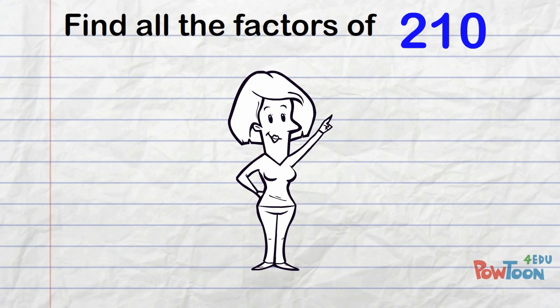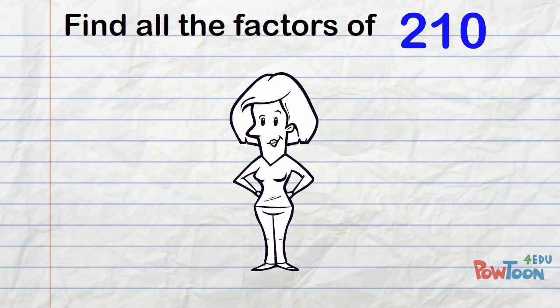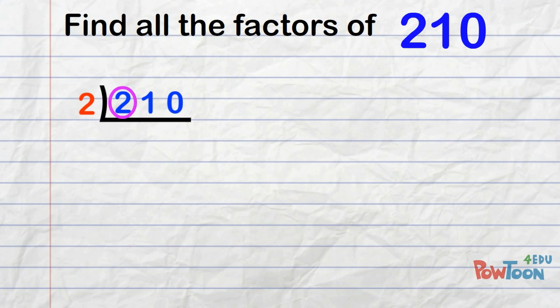210 is not in any multiplication table we know, so we can start the prime factorization with division. Our number is even, so we start with 2. 2s into 2 is 1, 2s into 1 is 0, and 2s into 10 is 5. 2 times 5 is 10, so 105.